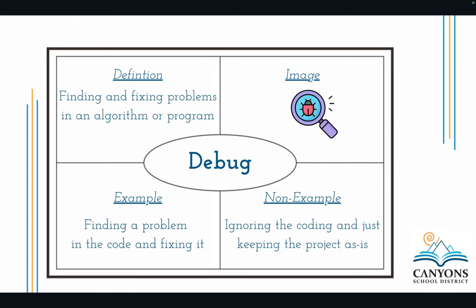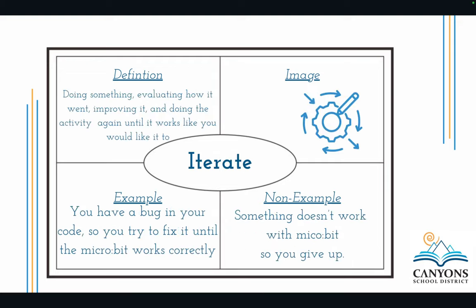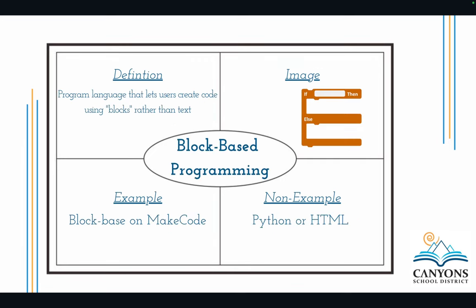Debugging is finding and fixing the problem in an algorithm or program — instead of just giving up, actually figuring out and fixing that problem. Iterate means doing something, evaluating how it went, and then improving upon it — they may build something, test it, it doesn't work, they fix things, test again, and keep going. Block-based coding uses a program language that allows users to create code using blocks rather than text — micro:bit works on MakeCode for this.